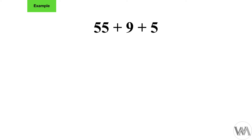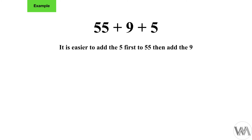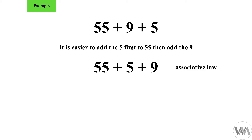Let's apply this to a more complex calculation: 55 plus nine plus five. If I first have to add nine to 55 and then add five, I have to really think about the results each time. But by applying the associative law, it is easier to add five first to 55 and then add nine. So swapping the nine and five around gives us 55 plus five plus nine, which equals 60 plus nine — that's easy: 69.